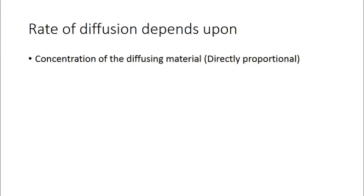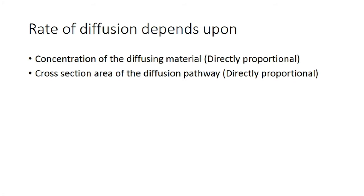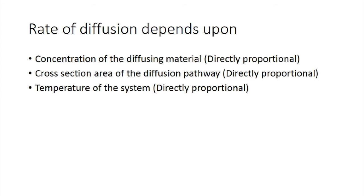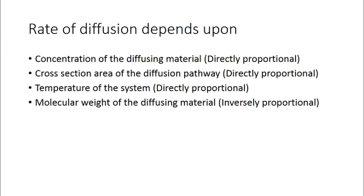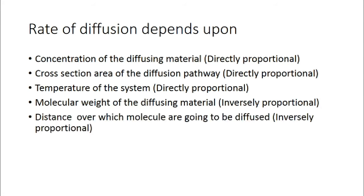The rate of diffusion depends on many factors. It is directly proportional to the concentration of the diffusing material — higher concentration means more diffusion. It is directly proportional to the cross-sectional area of the diffusion pathway. Temperature also increases diffusion, as more heat increases the kinetic energy of molecules. However, it is inversely proportional to molecular weight — the heavier the molecule, the less diffusion occurs. Distance is also inversely proportional — the greater the distance, the lower the diffusion rate.